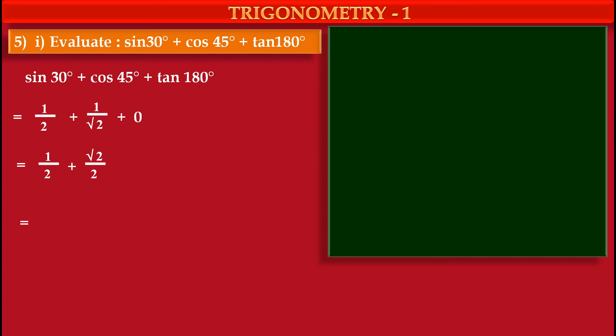Now these two terms have same denominators, so we can add numerators. But in numerator, first term's numerator is rational and second term's numerator is irrational, root 2. So we get 1 plus root 2 upon common denominator 2.